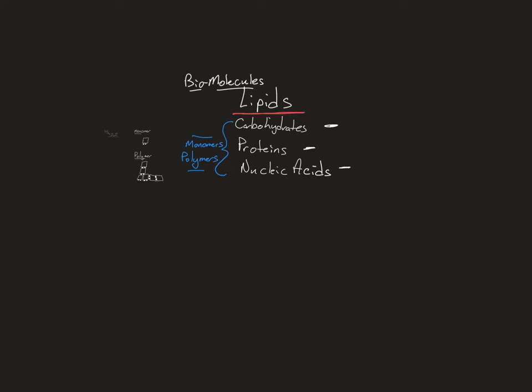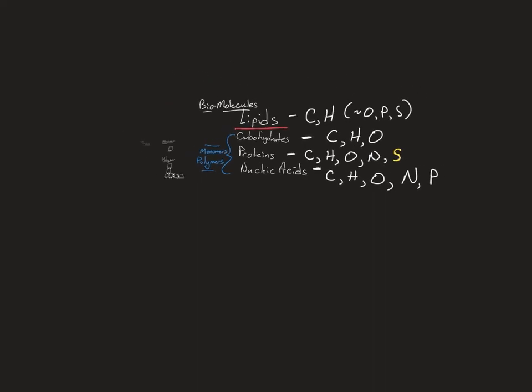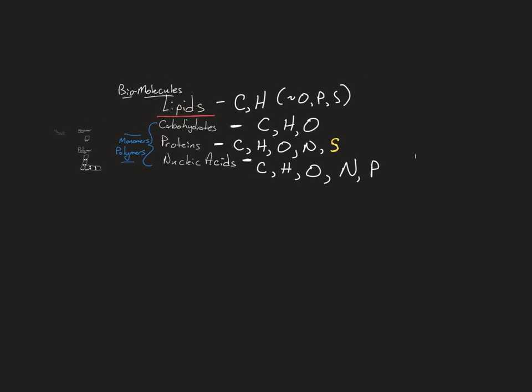So carbohydrates are biomolecules composed of carbon, hydrogen, and oxygen. Lipids are large biomolecules, mostly carbon and hydrogen, and maybe sometimes oxygen. And then proteins are composed of carbon, hydrogen, oxygen, nitrogen, and sometimes sulfur. And nucleic acids are complex biomolecules that store cellular and hereditary information, such as the code.